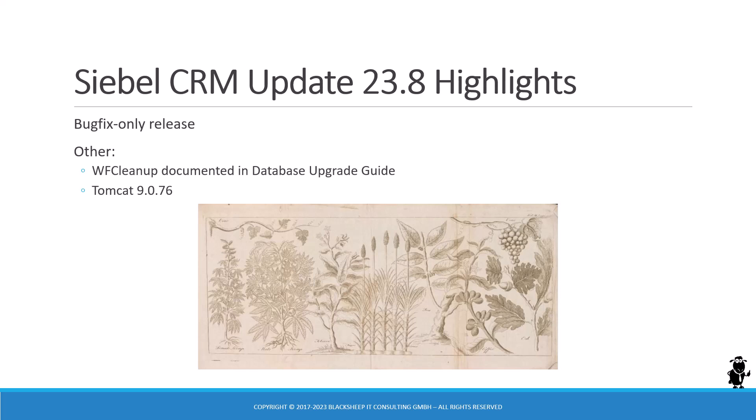It's a bug fix only release, so that means this video is probably going to be shorter. We're going to take a look at at least one interesting change in the database upgrade guide where the WF — the workflow cleanup utility — has been documented. If you're interested in the latest security issues, you'll be pleased to know that Tomcat has been updated to 9.0.76.